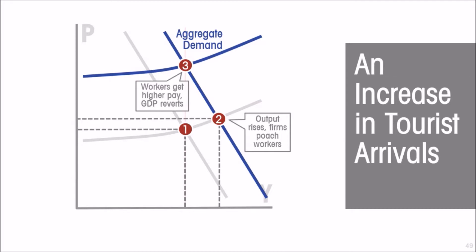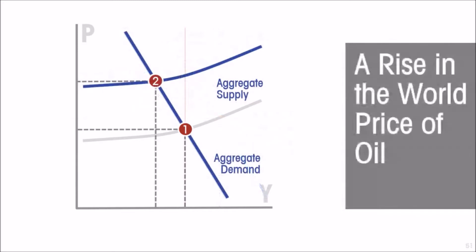That's an example of a positive demand shock. Now let us look at what happens if the economy has suffered a negative supply shock. Say it's an oil-dependent economy and there has been a rise in world oil prices, so the cost of energy has gone up. That higher cost of energy and therefore higher cost of production means aggregate demand has slumped, so the economy is producing less than its full employment level of output — less than its normal capacity. Production has fallen, workers have been laid off, and we have cyclical unemployment.